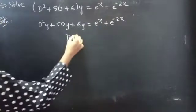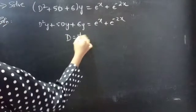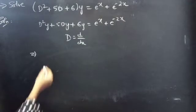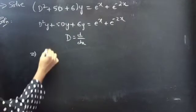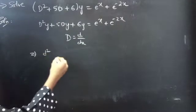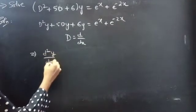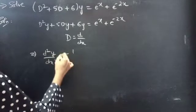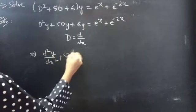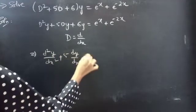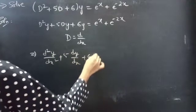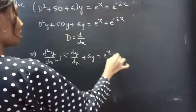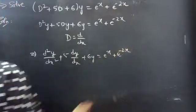We know that the differential operator D equals d/dx. Then we can write the given equation as d²y/dx² + 5·dy/dx + 6y = e^x + e^(−2x).